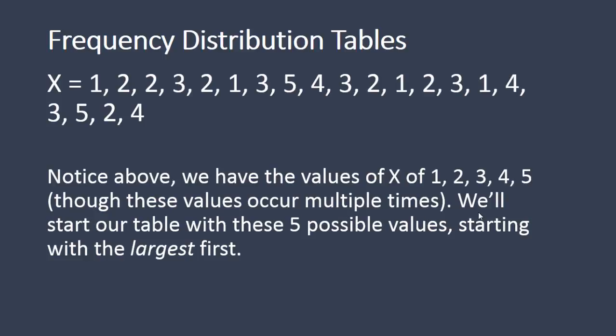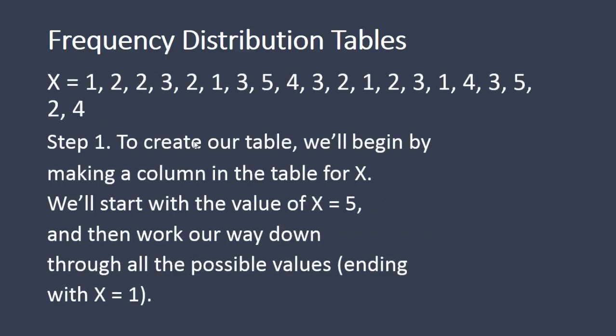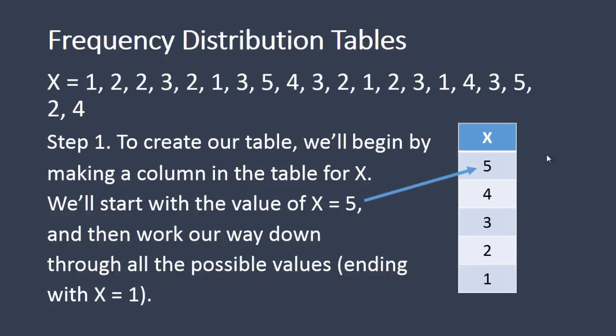We'll start our table with these 5 possible values and we'll start with the largest value first, which is the typical way of constructing a frequency distribution table. So as our first step, we're going to begin by making a column in the table for X. And we'll start with the value of 5 and then we'll work our way down through all possible values ending in an X of 1.